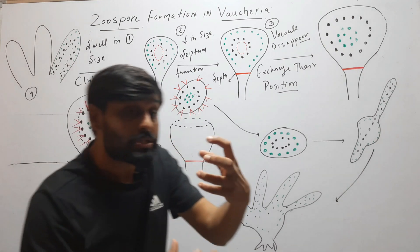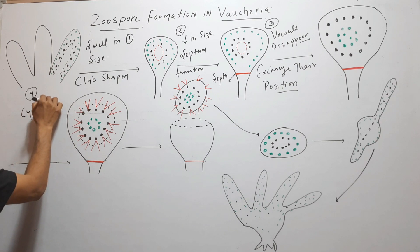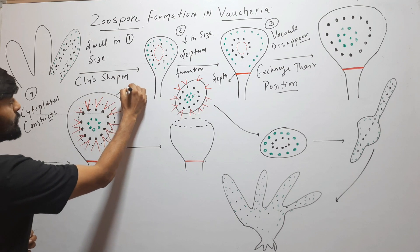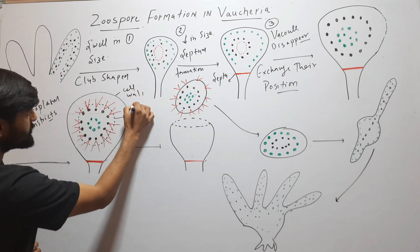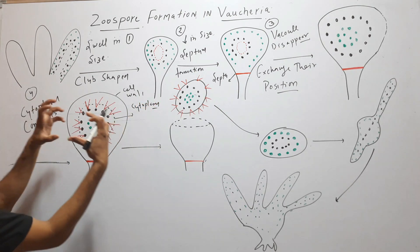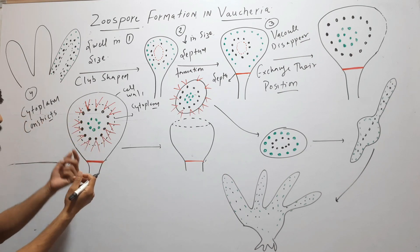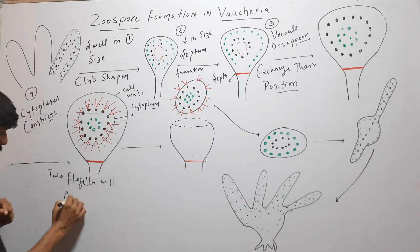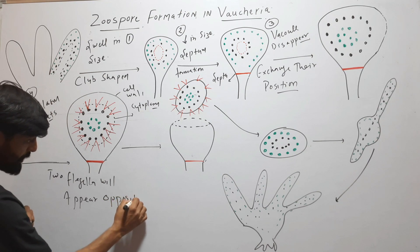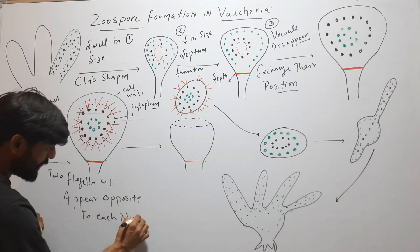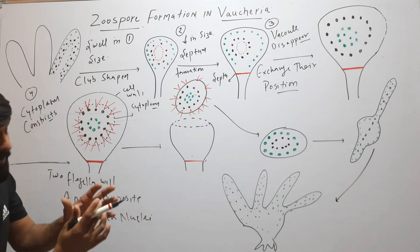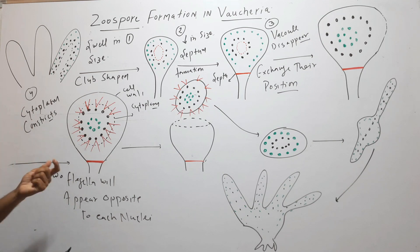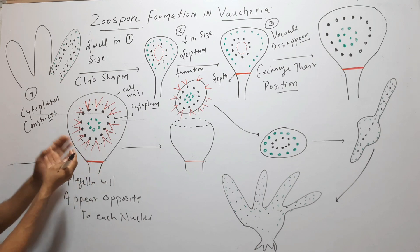In the fourth step, the cytoplasm will constrict from the cell wall. After constriction of the cytoplasm, two flagella will arise from opposite to each nucleus, and these two flagella are unequal in size. So in step 4, first the cytoplasm constricts and then two unequal flagella appear opposite to each nucleus.